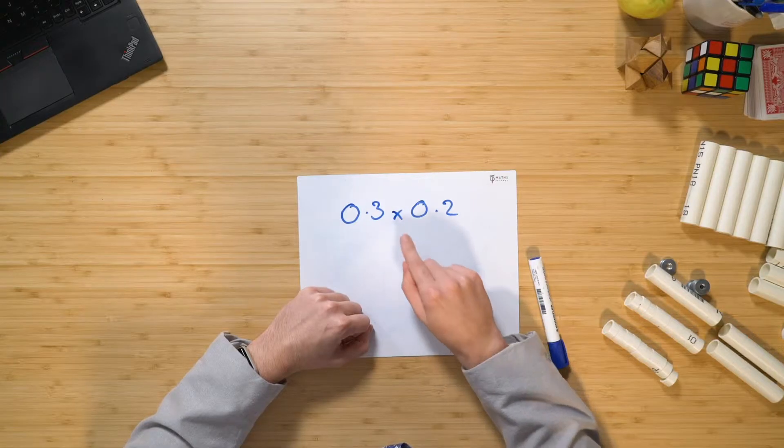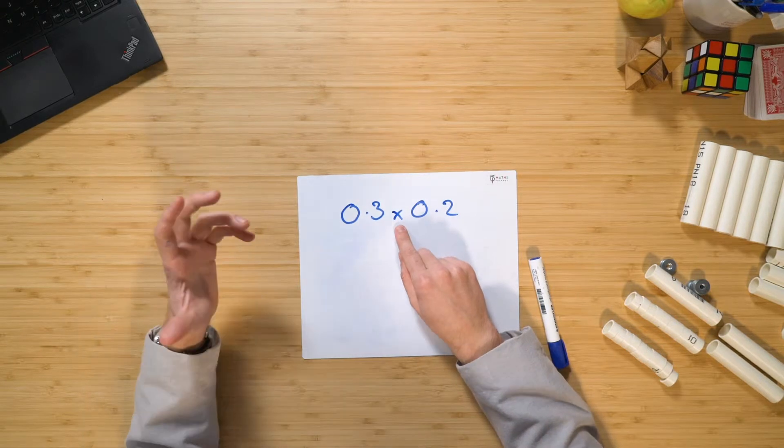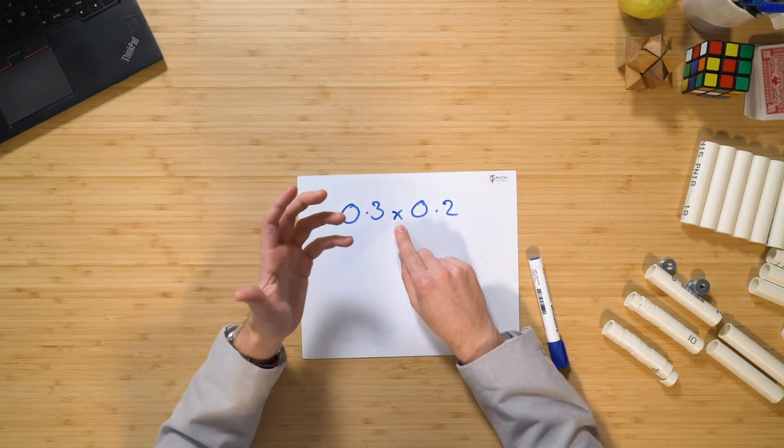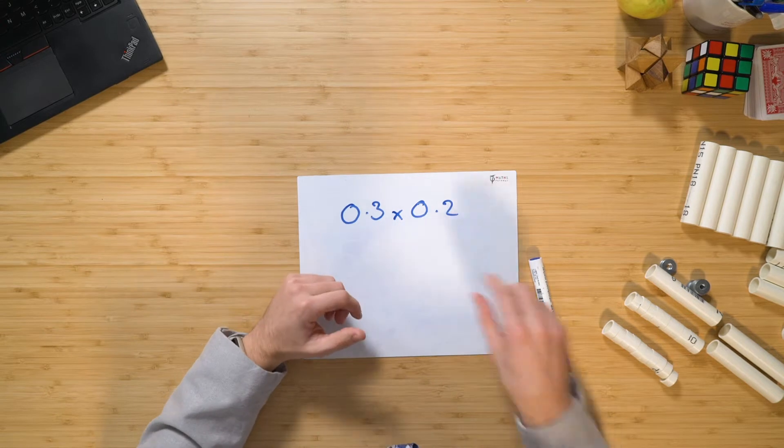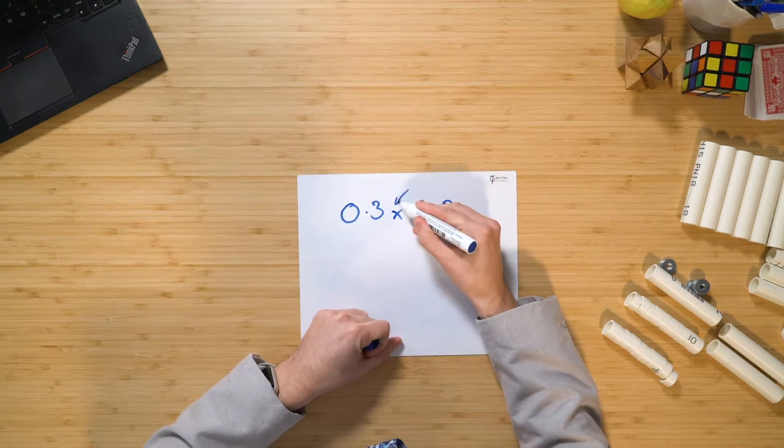The next one is to think of the times as being an of because when we think about three times two is like three groups of two. So we can really treat the times as an of.